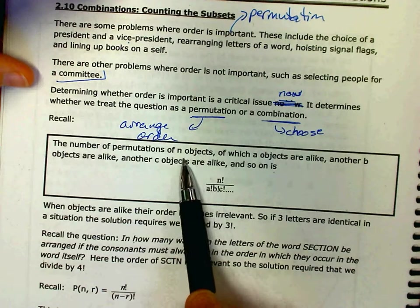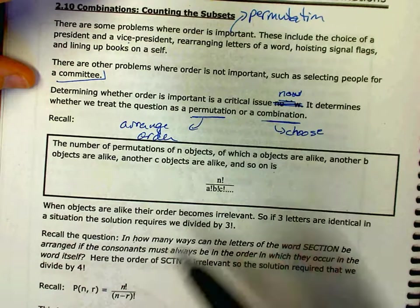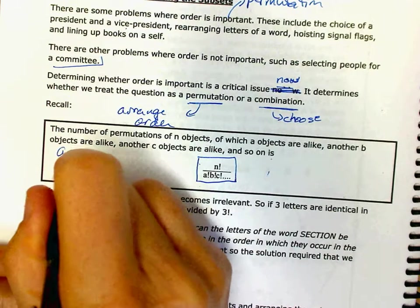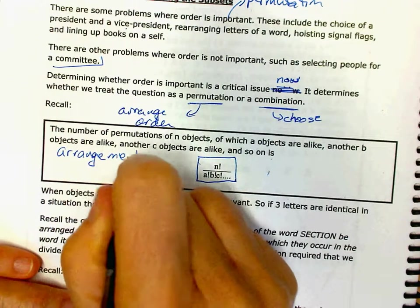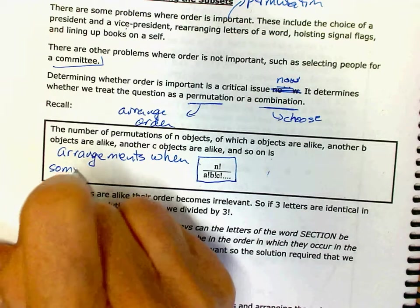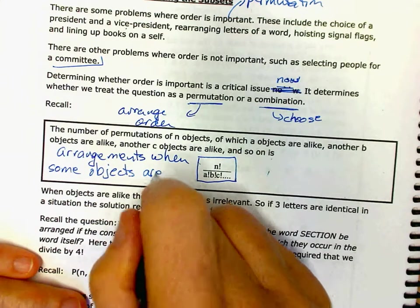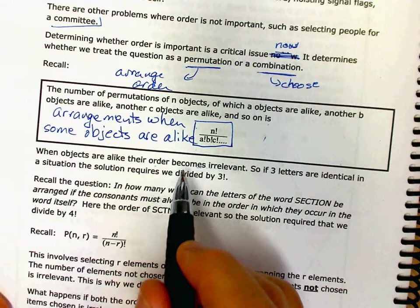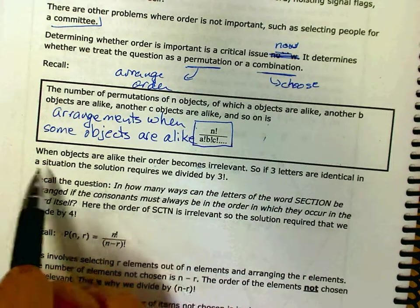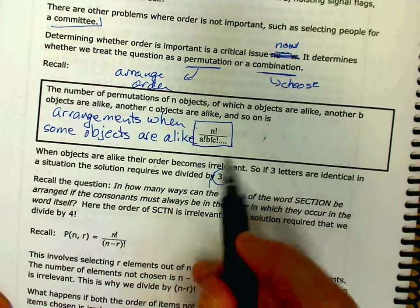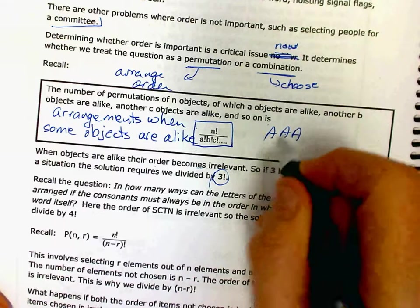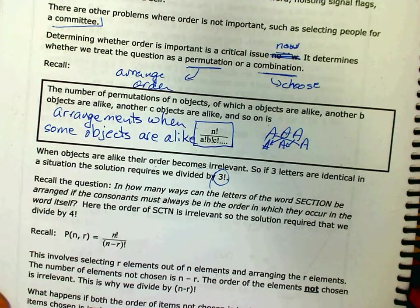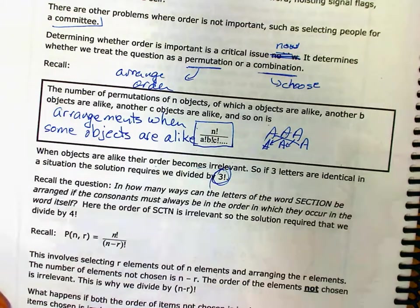The number of permutations of n objects of which a are alike, another b are alike. Do you remember this formula when you have some alike objects? Alright. This is arrangements when some objects are alike. That's that old formula. Arrangements when some objects are alike. Okay. When objects are alike, their order is irrelevant. So if three letters are identical in a situation, the solution requires we divide by three because their order is irrelevant. Who cares if that a goes before that, if that one goes there, or if that one goes there. It doesn't matter. It's still a, a. Order is irrelevant. So whenever order is irrelevant, we divide by three factorial, two factorial, whatever it may be.